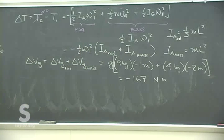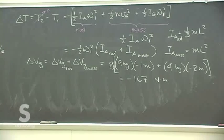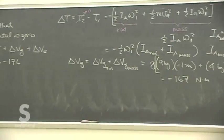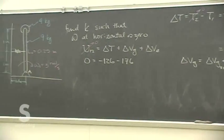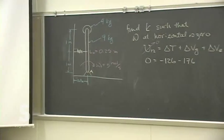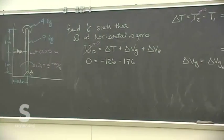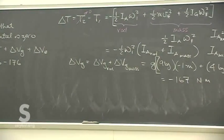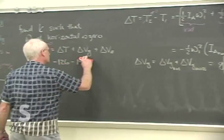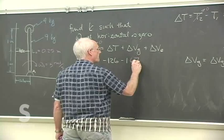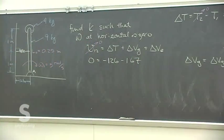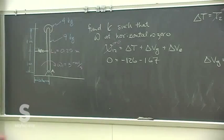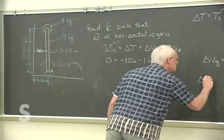Substituting into the elastic potential energy term gives approximately 758·k times the constant factor. Putting the whole equation together — delta T plus delta V_G plus delta V_E equals W_nc equals zero — and solving for k gives k ≈ 387 N/m. All units work out as long as lengths are in meters.